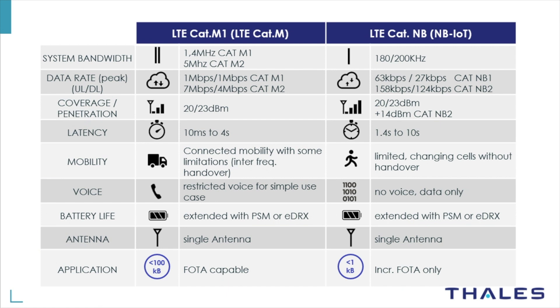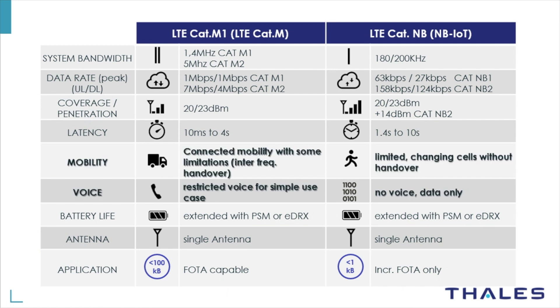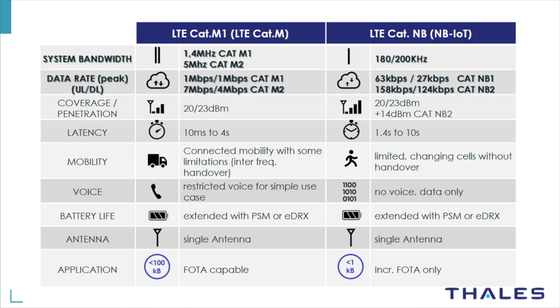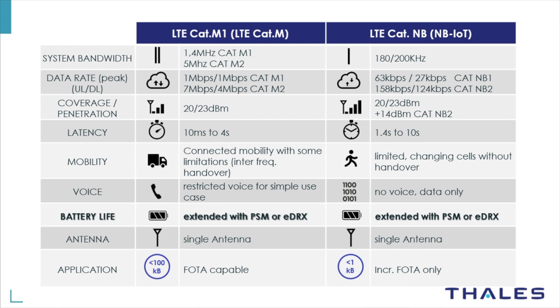For CATM and Narrowband IoT, the first thing is they are not really competing technologies. Both were introduced in 3GPP Release 13, and there are a few things crucial to understand why both technologies have different power consumption even when they have the same EDRX and PSM power saving modes. CATM has features like audio and mobility, higher throughput, and higher bandwidth, but all this comes with a higher current consumption. Both have, from a power saving perspective, the same PSM and EDRX.